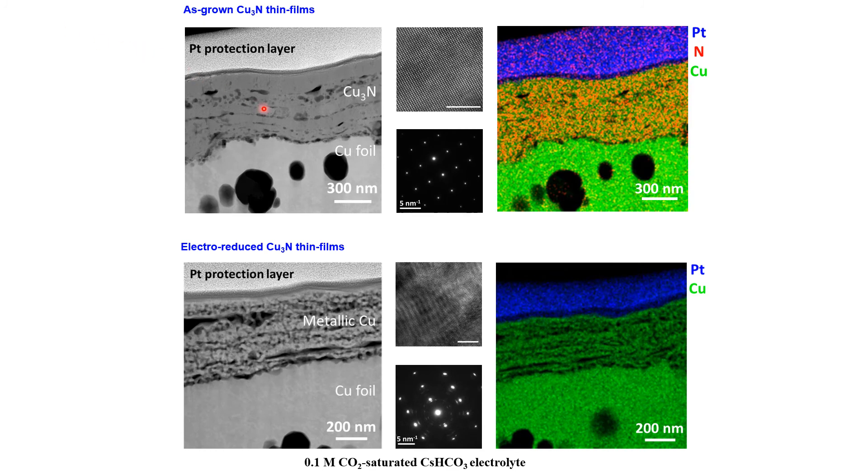This sample of copper nitride on copper foil is imaged by high-resolution TEM and EDX after being subjected to the electrochemical reduction at minus 0.6 volts in 0.1 molar CO2 saturated cesium bicarbonate electrolyte transforms to a highly roughened and mesoporous metallic copper layer atop the metallic copper foil. This transformation process involves a significant volumetric contraction of the material as the lattice nitrogen is eliminated, thereby forming this highly porous structure.